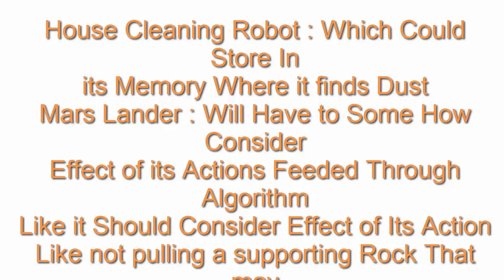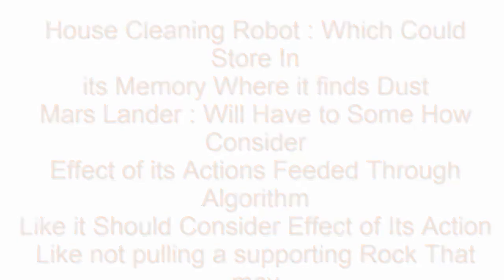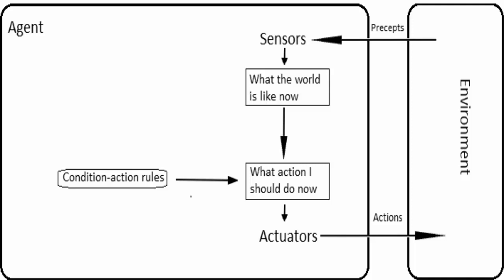In the case of a Mars lander, it will also have to consider the effect of its actions. This has to be fed through algorithms into the knowledge base of the agent. For example, it should consider the effect of actions like not pulling a supporting rock which could crush it — such situations must be fed into the knowledge base.